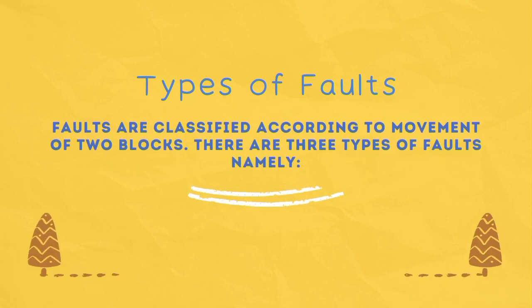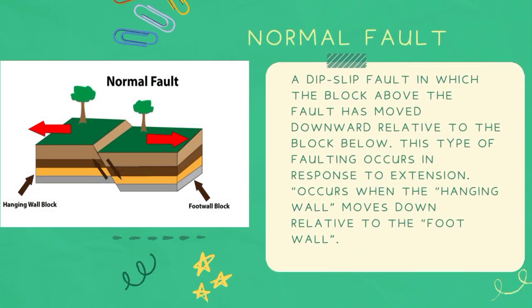Types of faults are classified according to the movement of two blocks. There are three types of faults. First, the Normal fault — a dip-slip fault in which the block above the fault has moved downward relative to the block below. This type of faulting occurs in response to extension. It occurs when the hanging wall moves down relative to the foot wall.